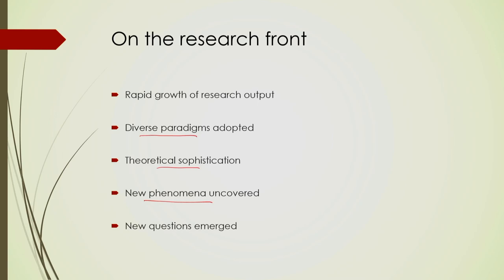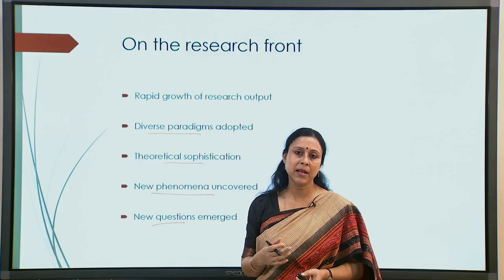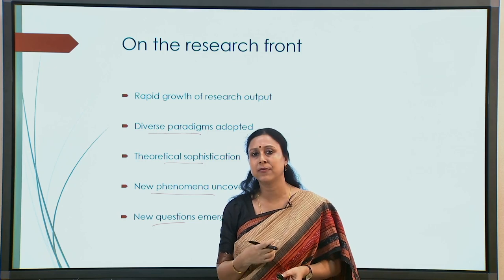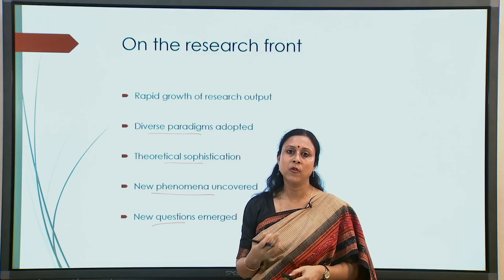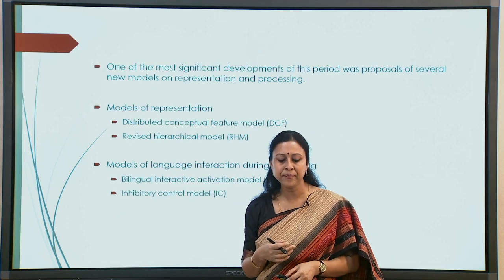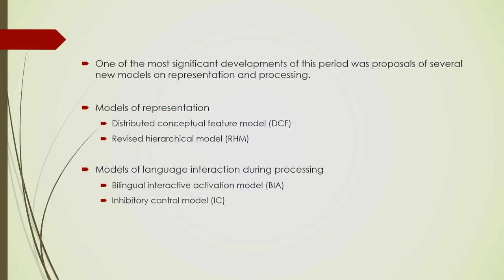Once newer phenomena were discovered, new questions emerged. From very simplistic, generalized findings from the 1950s through the 70s and 80s, by the 90s the simple questions of cross-linguistic priming had become a very nuanced and complex domain with multiple levels of dynamics across different parameters — proficiency, kind of task, degree of overlap, and so on. When we talk about theoretical sophistication, we talk about the new models that came out during this time, some of which we have already discussed.